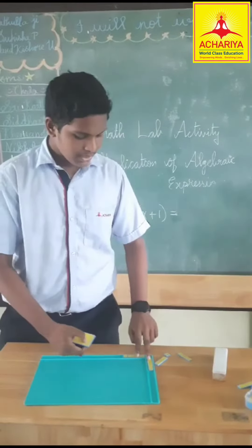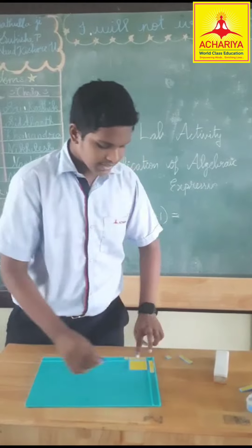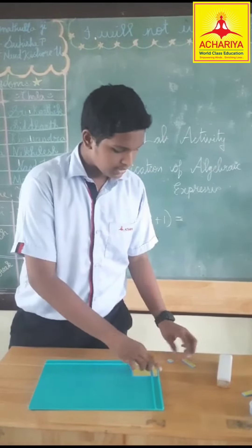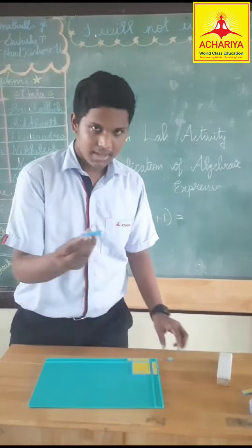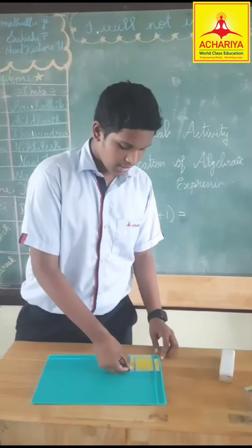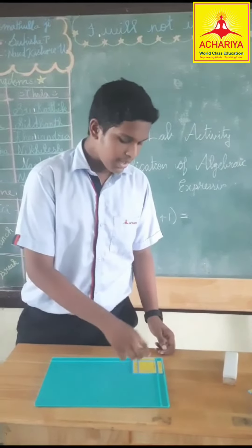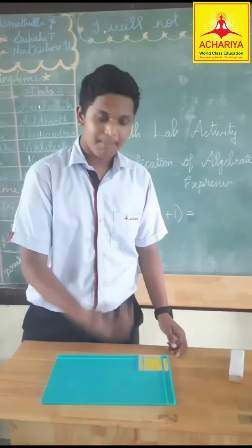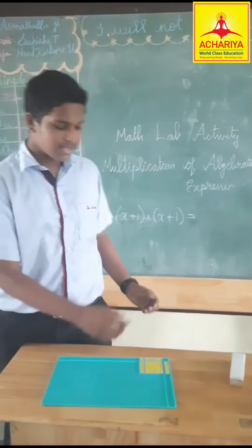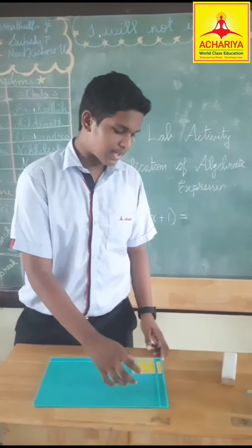x into x is x squared. x into 1 is x. 1 into x is equal to x, and 1 into 1 is equal to 1. The answer is x squared plus 2 into x plus 1. The total answer is x squared plus 2x plus 1.